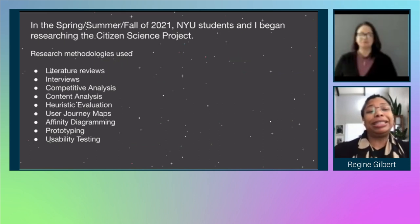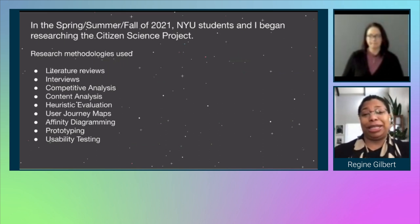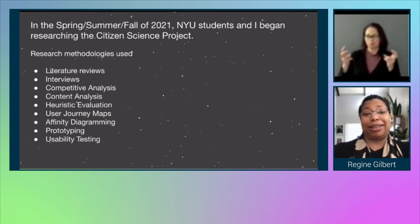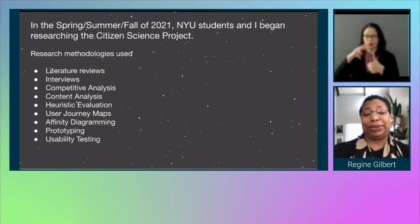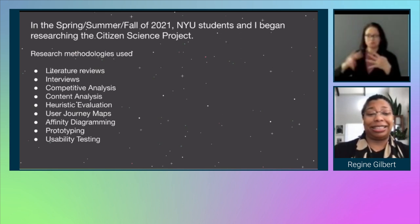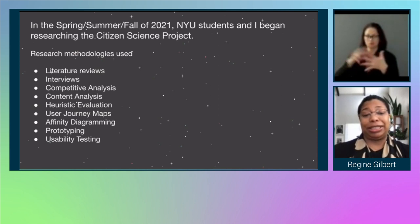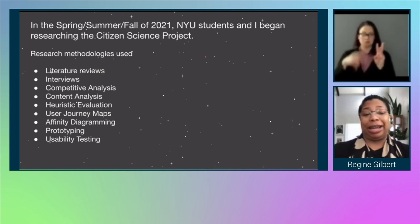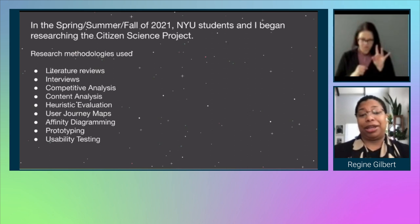In the spring, summer, and fall of 2021, NYU students and I began researching the citizen science project. Research methodologies used are literature reviews, interviews, competitive analysis, content analysis, heuristic evaluations, user journey maps, affinity diagramming, prototyping, and usability testing.